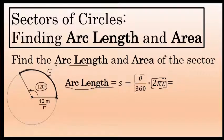The fraction it's multiplied by is the fraction of the circle that the sector represents. In this case, the sector's central angle is 120 degrees, so this sector is 120 over 360 of the entire circle. The entire circle is 360 degrees, so the fraction of the circle represented by this sector is 120 over 360. So this arc length S would be the circumference of the entire circle, 2 pi r, multiplied by that fraction, 120 over 360.